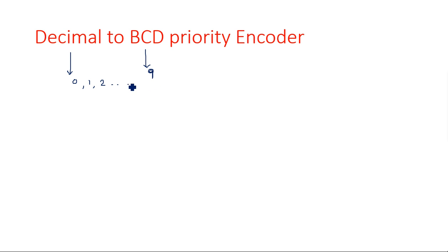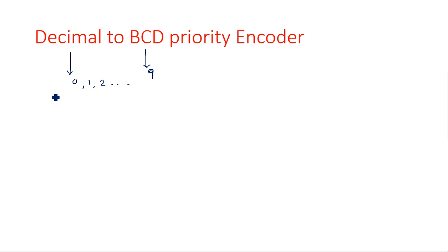Decimal numbers are taken on the left-hand side of the truth table and on the right-hand side we have the BCD numbers represented in binary format. In the decimal to BCD priority encoder, we have a total of 10 inputs: d0, d1, d2, and so on up to d9.